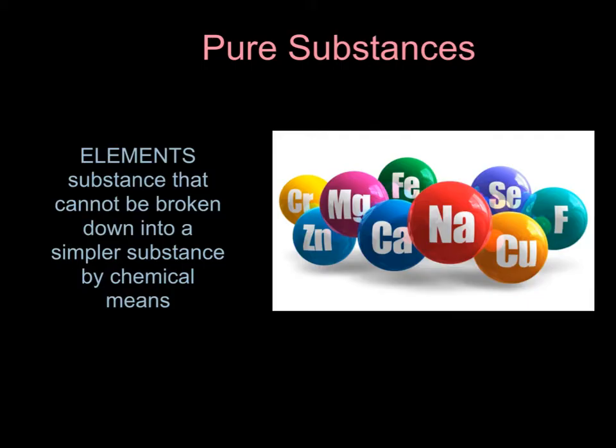There are two types of pure substances. The first is an element. Elements are substances that cannot be broken down into a simpler substance by chemical means. Elements are found on the periodic table, and we have names for elements and they are represented by symbols. So the symbol for sodium is Na, the symbol for manganese is Mn, and so forth.